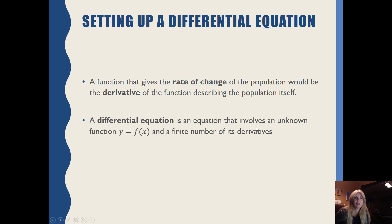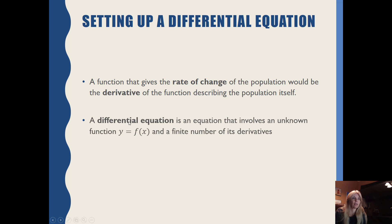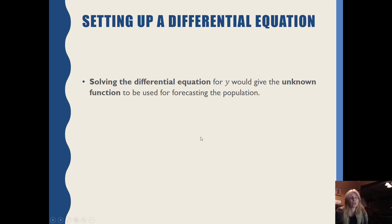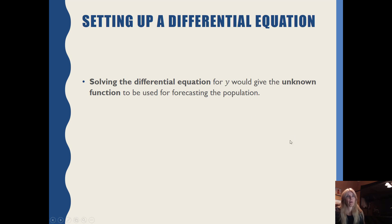A differential equation is an equation that involves an unknown function — this is the big difference. Instead of an unknown variable, we're going to have an unknown function with a finite number of its derivatives. So if I want to solve the differential equation for my unknown function, I could then have a function to forecast my population.